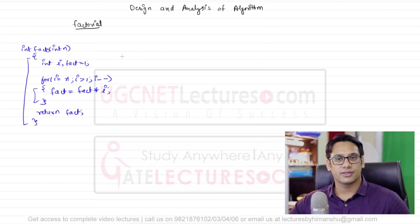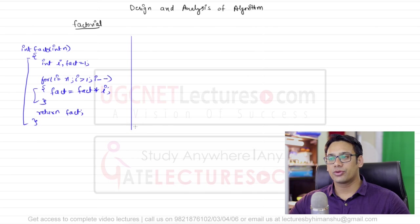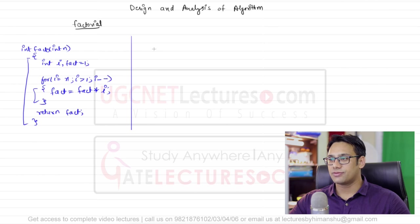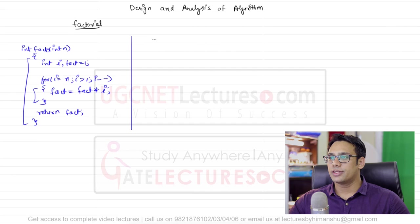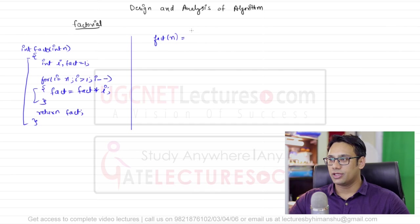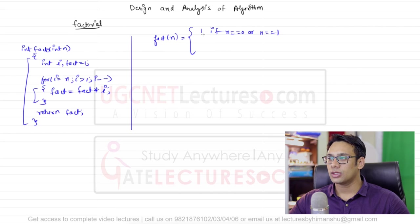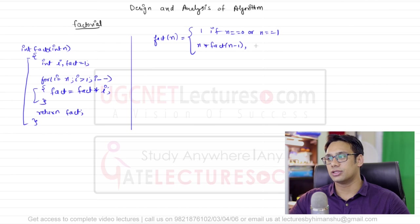The second kind of program is a recursive function, which is based on the mathematical definition of factorial. Mathematically, factorial(n) = 1 if n equals 0 or 1, and n * factorial(n - 1) otherwise. We also assume we are not passing negative numbers to the function.